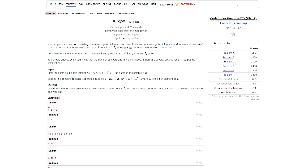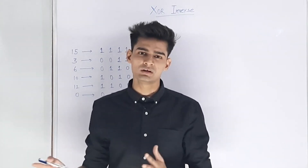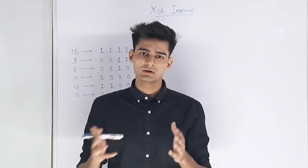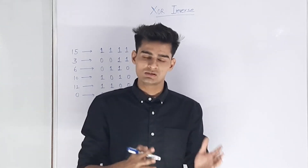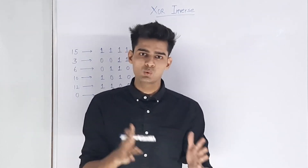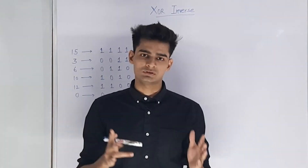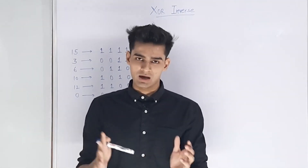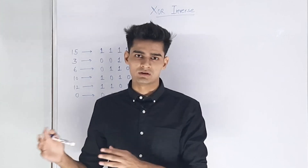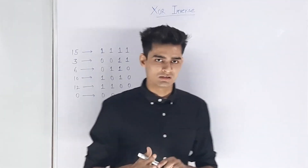Today we'll be solving problem XOR Inverse of Codeforces Round 673. The problem says you're given an array A of N non-negative integers and you have to choose a non-negative integer X and form a new array B such that B_i equals A_i XOR X. This X should minimize the number of inversions in array B. An inversion means for two indexes i and j, i is less than j and B_i is greater than B_j.